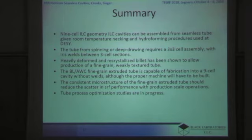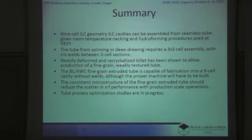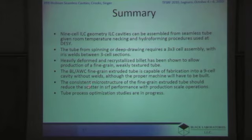Finally, what we found is that we could produce nine-cell cavities either by the DAISY method of 3 plus 3 plus 3, or with our method of a tube that could go into a full nine-cell. The heavily deformed recrystallized billet allowed us to make a fine-grained, weakly textured tube using the extrusion process. We think that using the hydroforming method will allow us to develop an industrial production capability for ILC cavities with less scattering SRF performance, and we're working on some process optimization studies now.